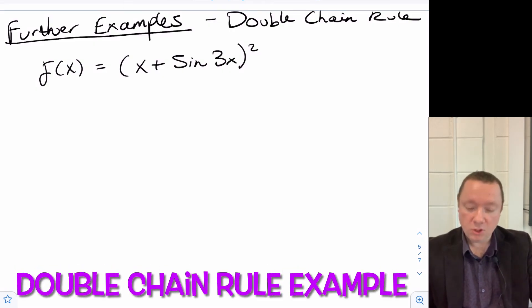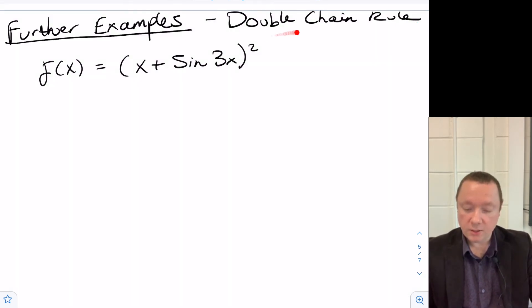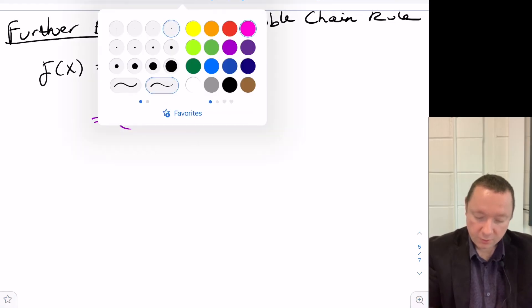Alright, so for the last example, sometimes you have to do it twice. You have to do the chain rule upon the chain rule. These can nest in each other over and over. So for instance, if I had f(x), it's (x plus sine 3x) squared. If I rewrite that, then that equals (x plus sine 3x) squared. That's my f(x).